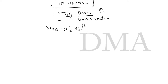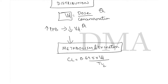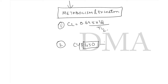Following distribution, you have metabolism and excretion. The formula for clearance is: clearance equals 0.695 multiplied by volume of distribution divided by half-life. Metabolism is mediated by the cytochrome P450 system, with CYP3A4 being the most common and CYP2D6 the second most common.